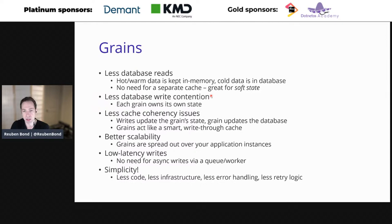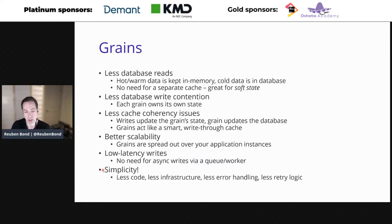You also have less database write contention because each single-threaded grain is responsible for its own state. If you want to update a blog post, you go through that blog post grain — it coordinates the writes so there are no conflicts. Because Orleans manages instances, you don't have to deal with cache coherency issues. You get good scalability by dividing your system into grains, Orleans spreads them across the cluster. You don't need queues and workers for database writes, and the upshot is less code, less infrastructure, less error handling and retry logic.